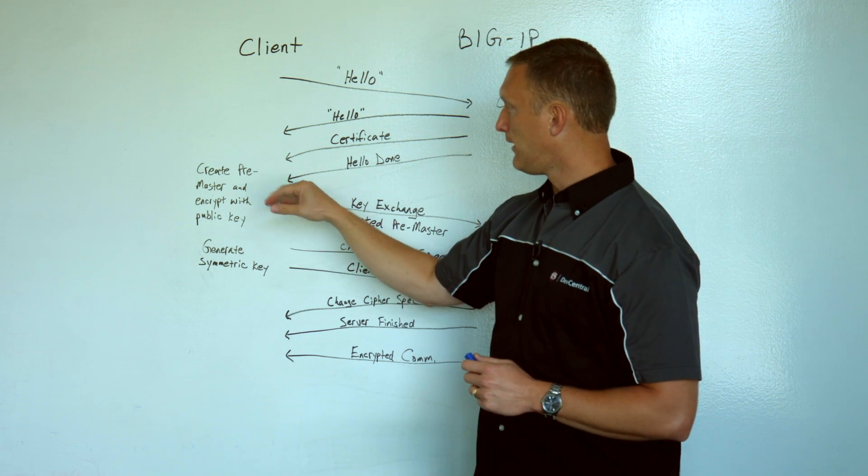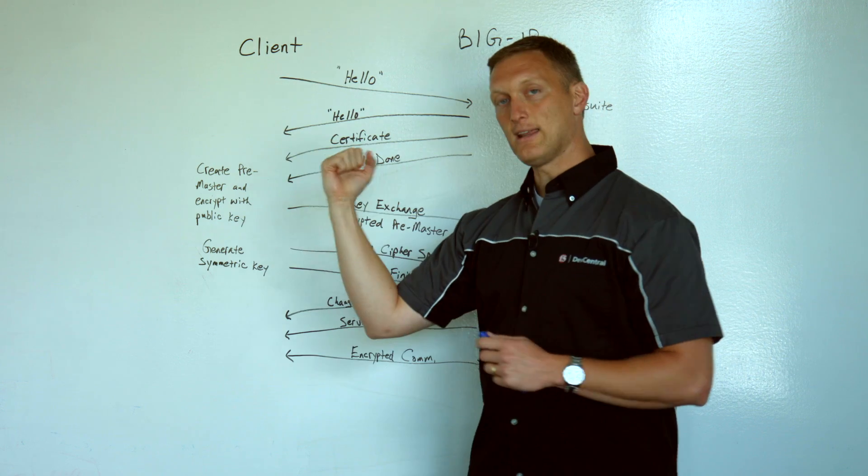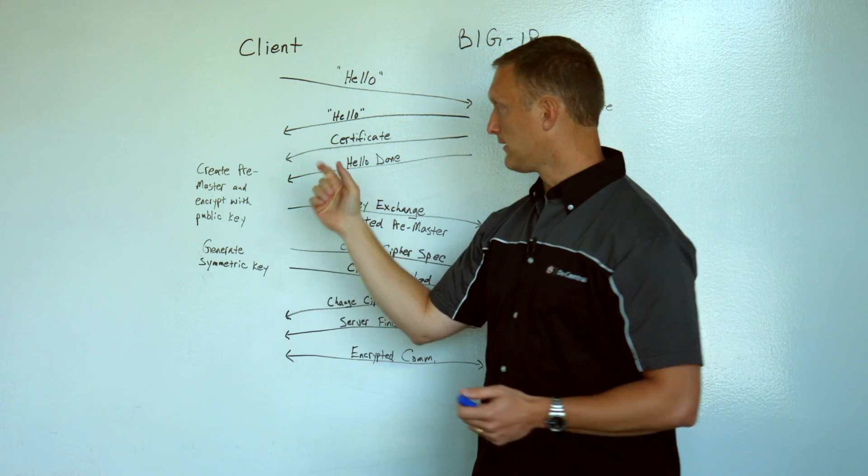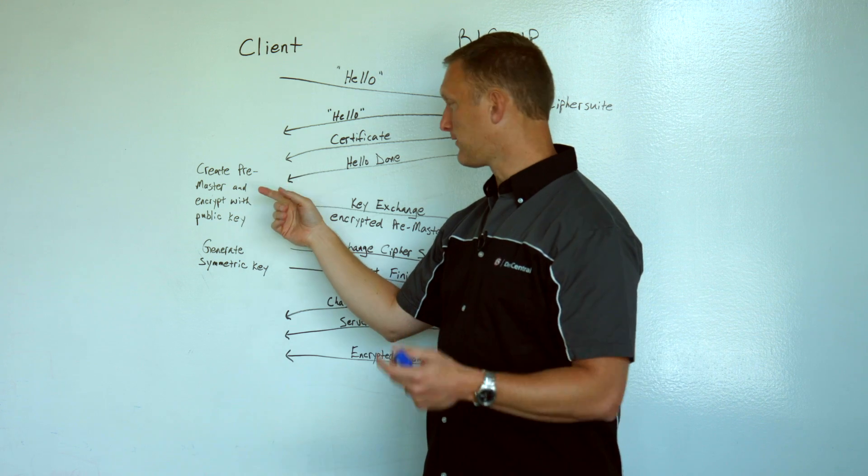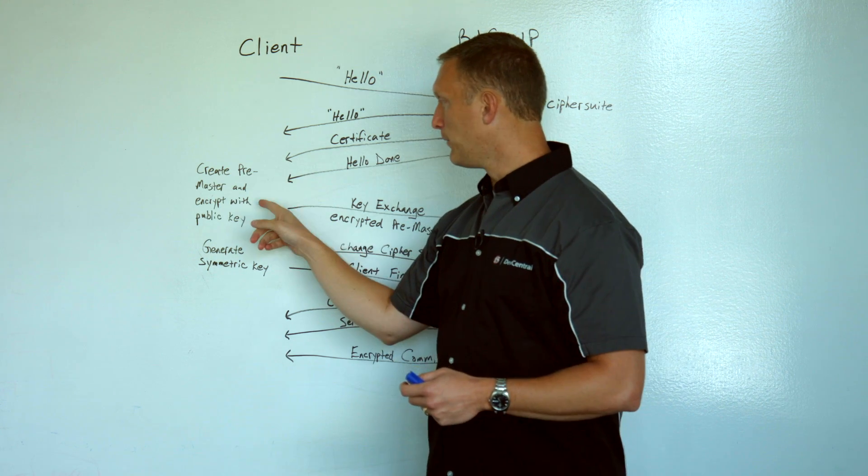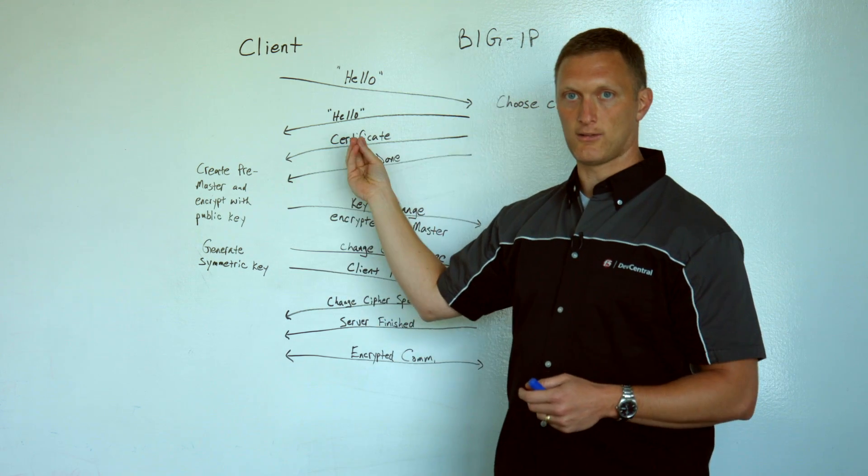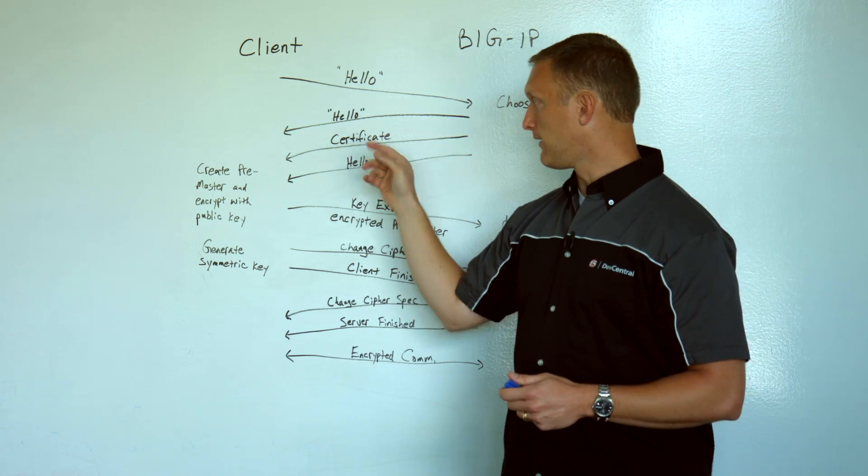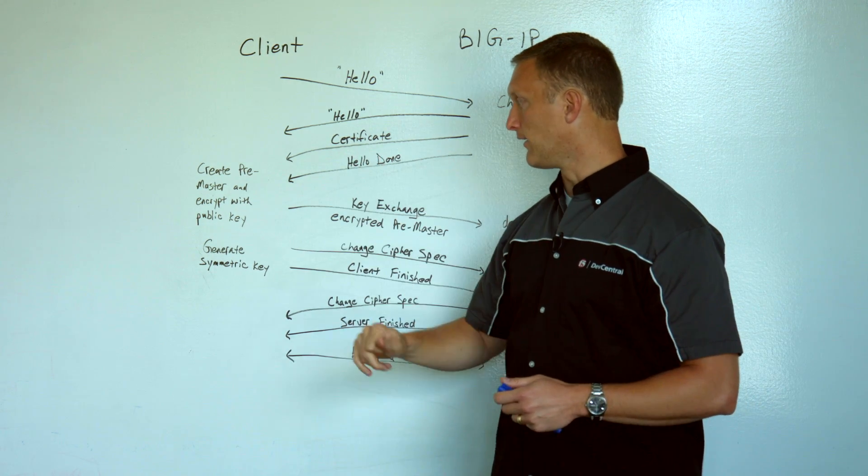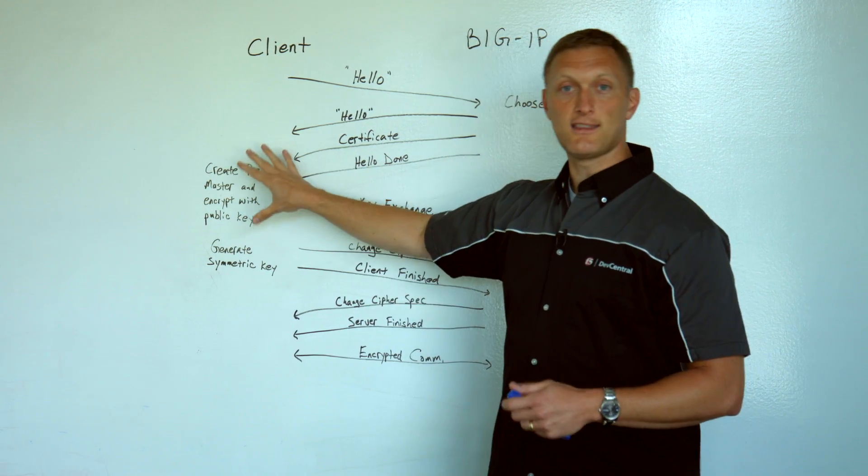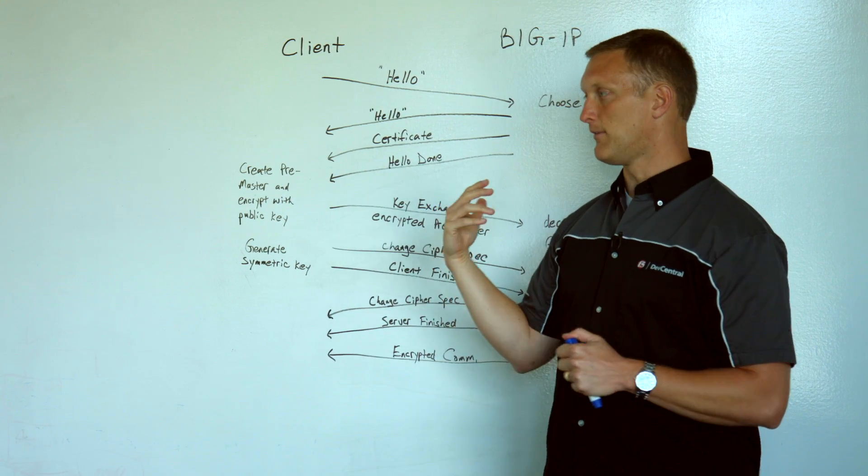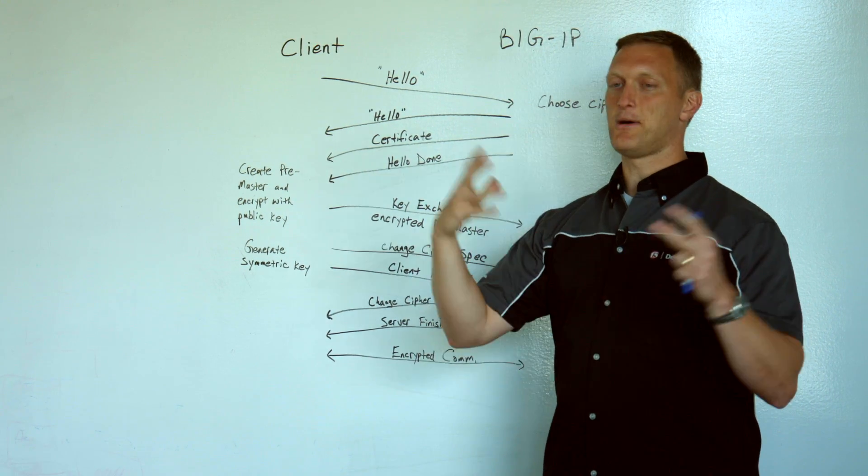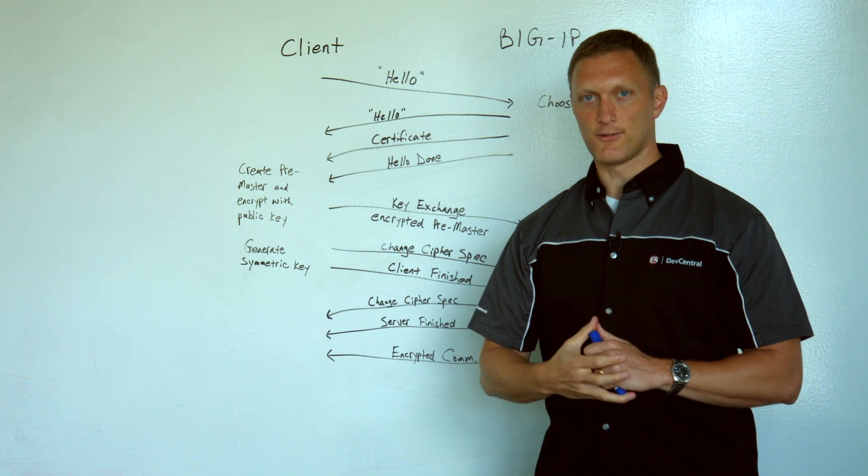After the hello done, the client is going to get that certificate, which includes the public key, and it's going to create a pre-master secret, and it's going to encrypt that with the public key that it now has from the server because it got it via the certificate here. The nice thing or the interesting thing about all this is this gets into that asymmetric encryption. This is the whole public key cryptography.